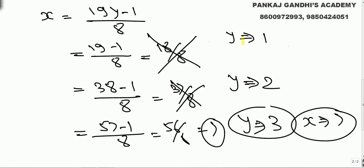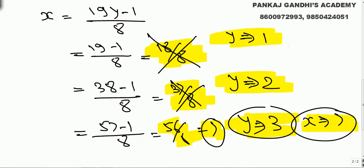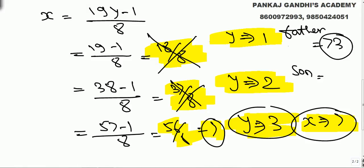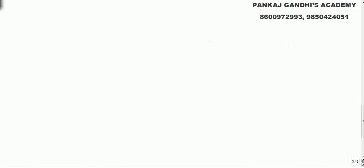By trial and error: y = 1 gives a fractional value, y = 2 gives a fractional value, y = 3 gives x = 7. So father's present age is 73, son's present age is 37 — inverses of each other. One year back: 72 and 36, and 72 is indeed twice 36.